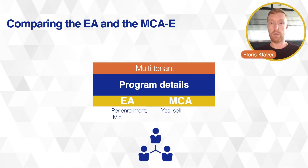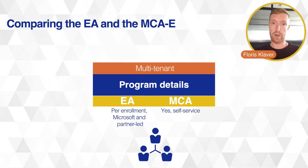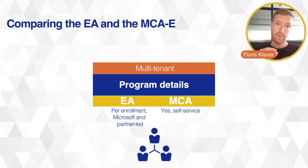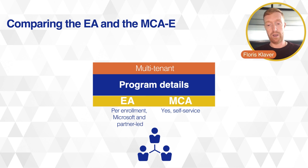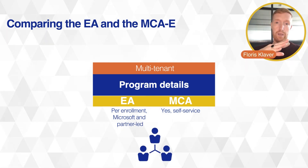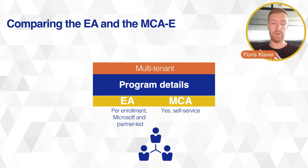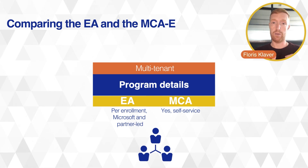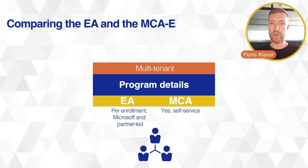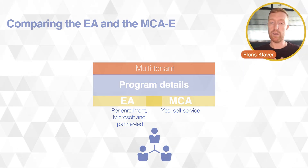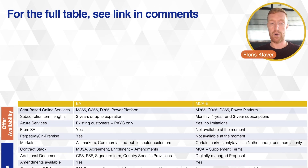A big issue for many organizations in the Enterprise Agreement was how Microsoft handled multi-tenants — multiple tenants under one agreement. It was very difficult to set up: you had to create billing enrollments, link tenants to them, and get separate invoices for each tenant all sent to the entity holding the contract. In the MCAE this is all self-service. You can decide yourself whether to add certain tenants or set up a different Microsoft Customer Agreement, and billing profiles make the invoicing much easier to manage.